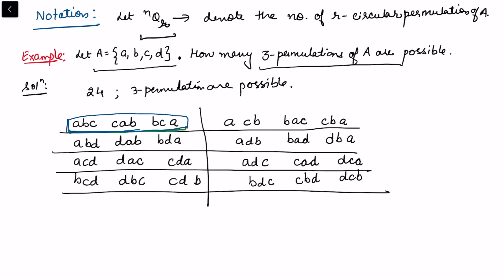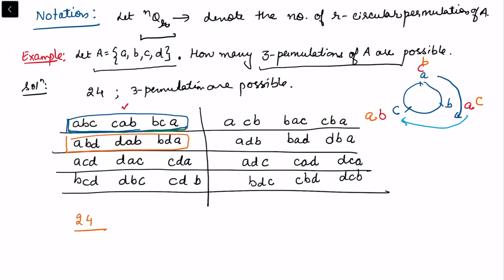Each group, when studied in the circular sense, gives rise to the same arrangement. Consider three positions around a circle with a, b, c. Rotating gives c, a, b, then b, c, a — these are the same rotation. So looking at it rotation-wise, there are 24 divided by 3 equals 8 circular permutations. We divide by 3 because there are 3 elements used in each case.